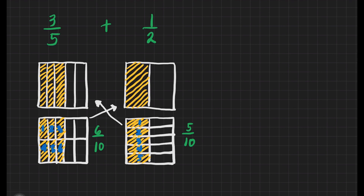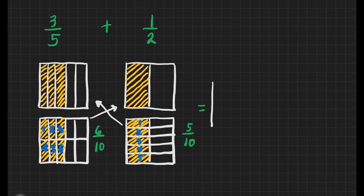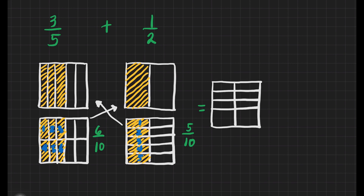Now we can already add these two fractions since they are similar — they have the same denominator. We'll draw a box divided into 10 equal parts because we have a denominator of 10. Then we will shade 6 parts for the first fraction: 1, 2, 3, 4, 5, and 6.